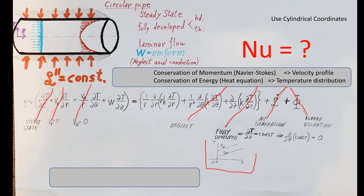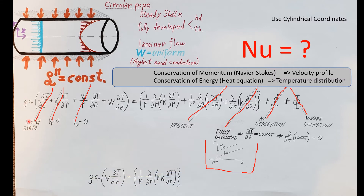Under fully developed conditions, the derivative of T with respect to z: this little sketch can help you remember that in a constant flux setup, the temperature at the wall and the mean temperature both go up in a linear fashion. That means dT/dz is a constant. But the heat equation requires taking yet another derivative of it, and the derivative of a constant gives us zero. Therefore we can cross this term out.